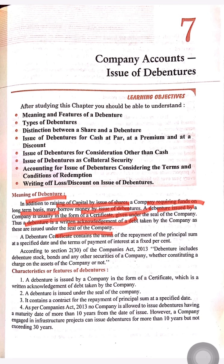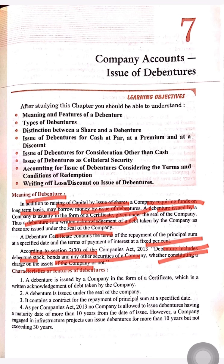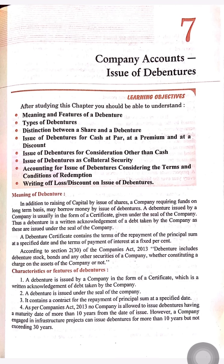The debenture certificate contains the terms of repayment of the principal sum, and there are many types of repayment schemes mentioned in it. According to Section 2, subsection 30 of the Companies Act 2013, debentures include debenture stock, bonds, and any other securities of a company, whether consisting a charge on the assets of the company or not. Debentures are instruments by which a company can borrow money as a term of loan, and the company will repay it after a specified time. On the debenture, the company pays interest.